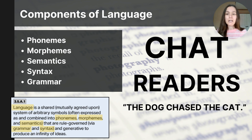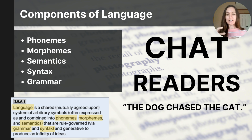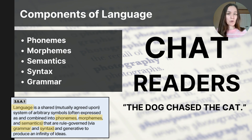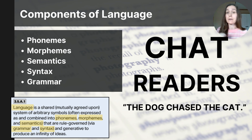Semantics refers to the meaning of words and sentences — what the word itself means. Think of 'semantics' as sounding like 'sense,' as in whether something makes sense. The word 'bank' is a great example: it could mean a riverbank or a financial institution. Depending on the context, its semantics — its meaning — can be different.